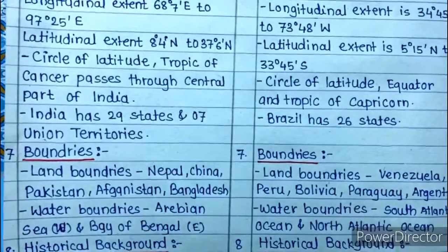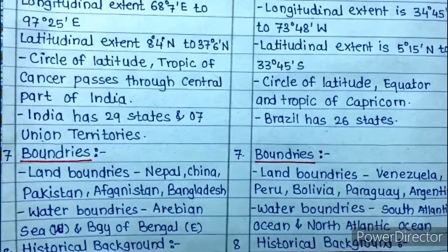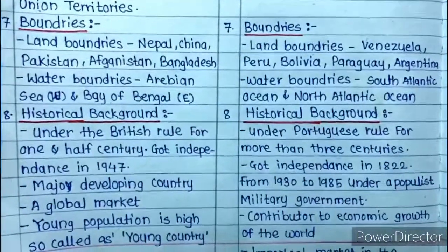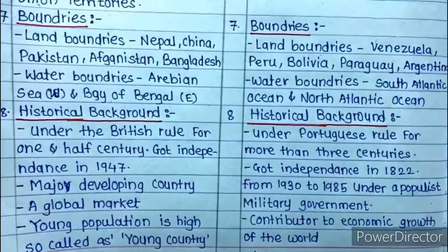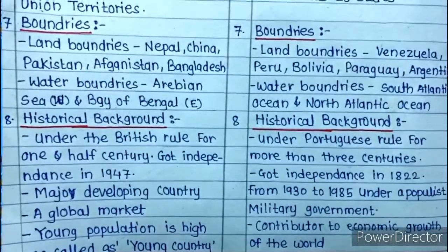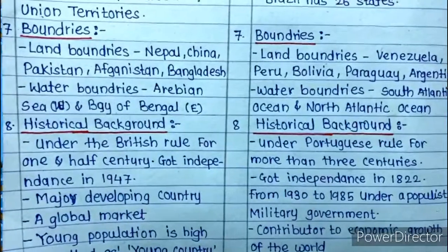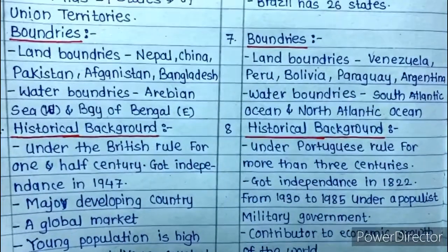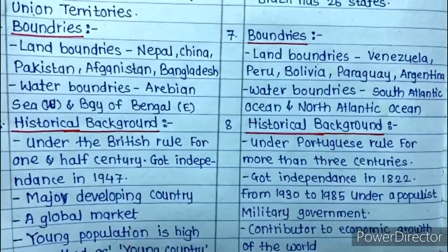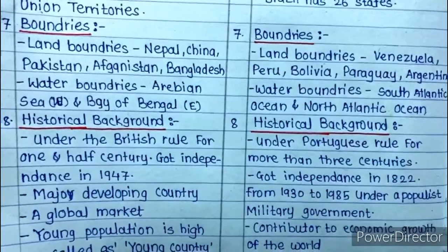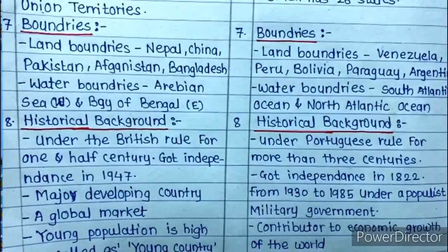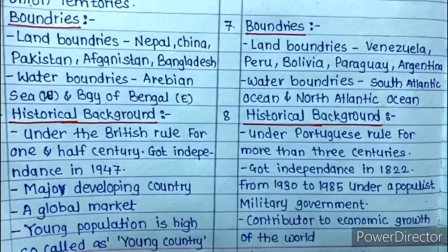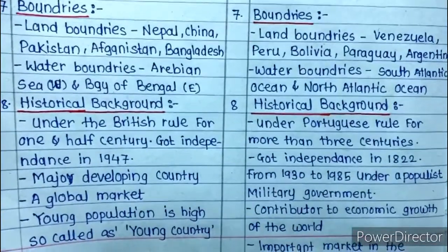India has 29 states and 7 union territories, whereas Brazil has 26 states. Moving to boundaries — the land boundaries of India include Nepal, China, Pakistan, Afghanistan, and Bangladesh, while the land boundaries of Brazil include Venezuela, Peru, Bolivia, Paraguay, and Argentina. The water boundaries of India are the Arabian Sea to the west and the Bay of Bengal to the east, whereas Brazil's water boundaries are the South Atlantic Ocean and the North Atlantic Ocean.